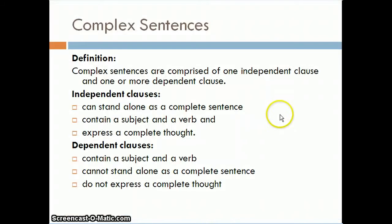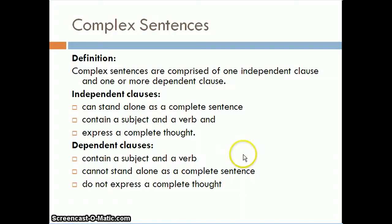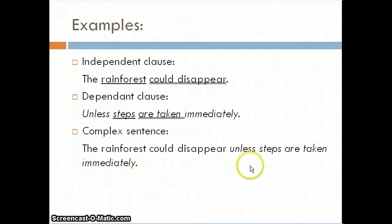Complex sentences are comprised of one independent clause and one or more dependent clauses. Independent clauses can stand alone as a complete sentence because they contain a subject and a verb and express a complete thought. Dependent clauses also contain a subject and a verb, but they cannot stand alone because they do not express a complete thought — some word makes the clause dependent, leaving you wanting more information.